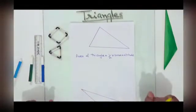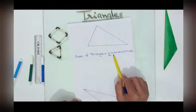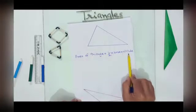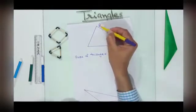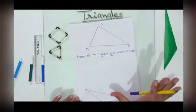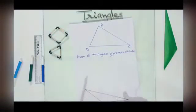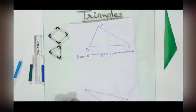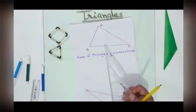Now if I talk about the area of a triangle, all of you know it very well — area of triangle is half into base into altitude, where altitude means height. This triangle ABC has three sides and we can consider any side as its base. Suppose BC is the base, then the corresponding altitude is the one drawn on BC from vertex A.